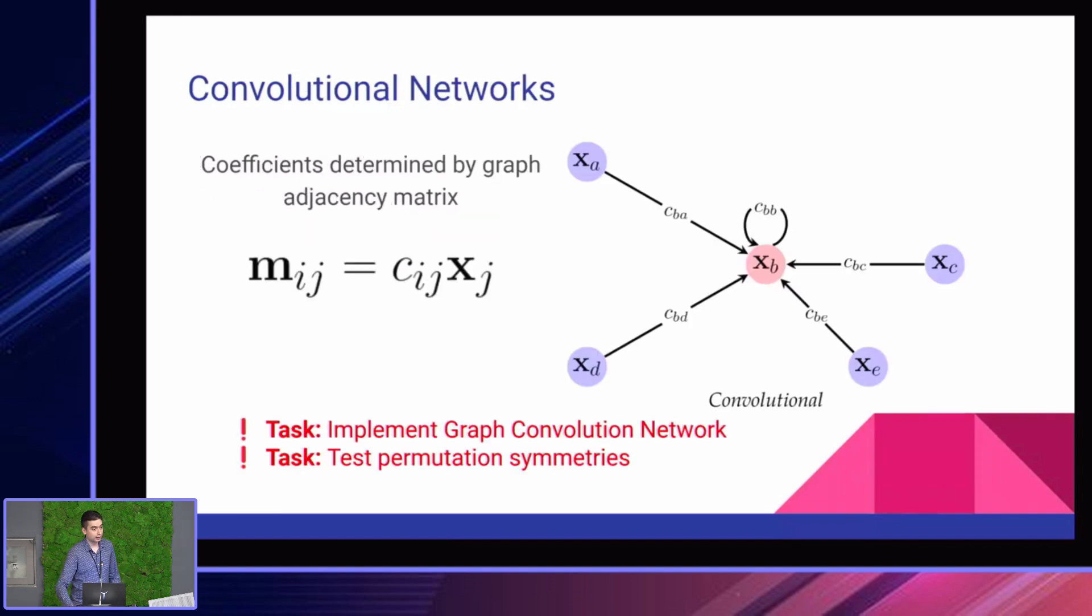And the convolutional networks are the most simple. So here we're just multiplying by a constant, and this constant only depends on the graph structure, so only on the adjacency matrix. And you have a diagram of that on the right. And you will start your tutorial by implementing a GNN layer called graph convolutional network. Here, these constants are derived from the node degrees in the graph. After that, you will run some tests, or I should say create some tests, to make sure that this network satisfies permutation invariance and equivalence.